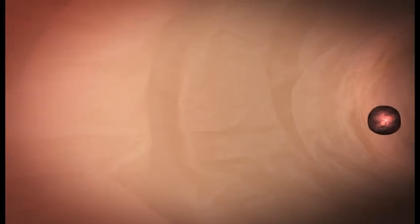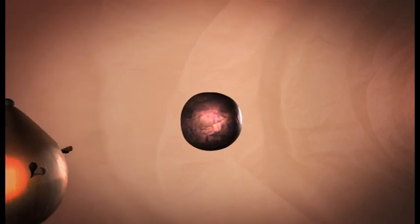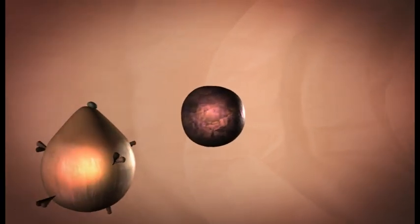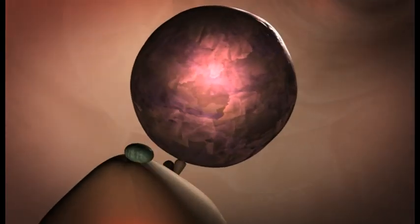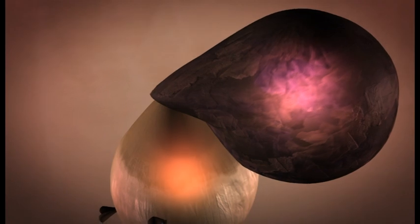The cell approaching the B cell is a helper T cell. The T cell also has receptors that match the presented antigen. The T cell uses its receptor to connect to the bacterium fragment and B cell. This connection activates both cells.